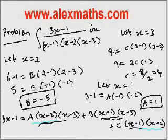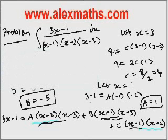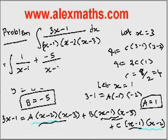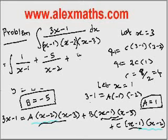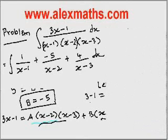Now I have the values of A, B, and C. Since we already split using partial fractions, I am going to substitute them. So the integral becomes: 1 by x minus 1, plus minus 5 by x minus 2, plus 4 by x minus 3, all dx.